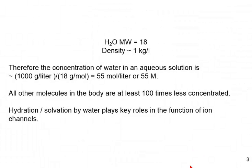We will go on to the next point and we'll actually calculate from first principles from the stuff that you learned in Chem 1 the abundance of water. The molecular weight of water, H2O, is around 18. Its density, as you know, is about 1 kilogram per liter. So, the concentration of water in an aqueous solution is 1,000 grams per liter divided by 18 grams per mole or 55 moles per liter or 55 molar. All the other molecules in the body are at least 100 times less concentrated. We need to pay attention to the properties of water, including the hydration and solvation of various ions and molecules by water.